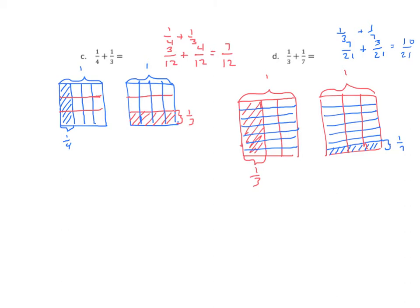The factors of seven are one and seven. Twelve has factors of one and twelve, two and six, and three and four. The only factor they have in common is one. The same applies to the next problem.